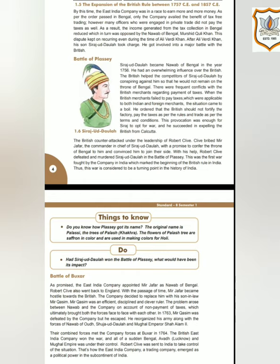The British counterattacked under the leadership of Robert Clive. Clive bribed Mir Jafar, the commander-in-chief of Siraj ud-Daulah, with a promise to confer the throne of Bengal upon him and convinced him to join their side. With this help, Robert Clive defeated and killed Siraj ud-Daulah in the Battle of Plassey. This was the first war fought by the company in India, which marked the beginning of British rule in India. Thus, this war is considered a turning point in the history of India.